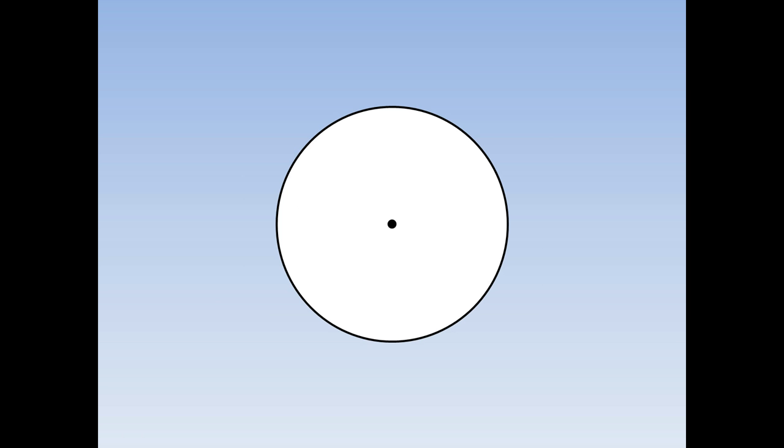Let's remind ourselves about different bits of a circle. The distance from side to side, through the center, is called the diameter.